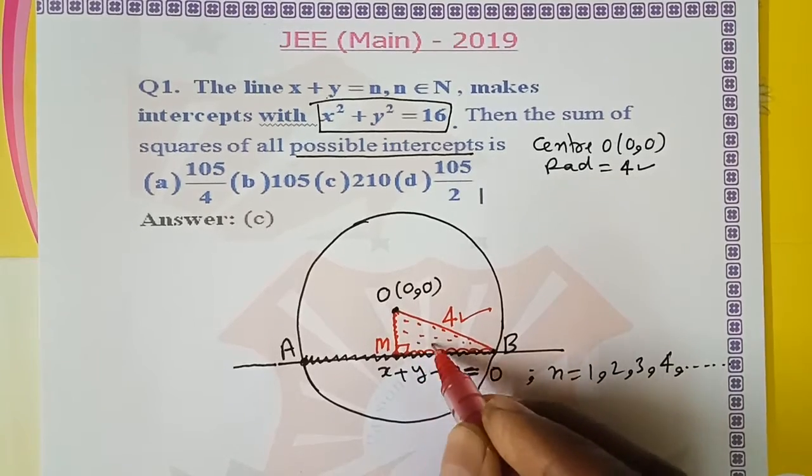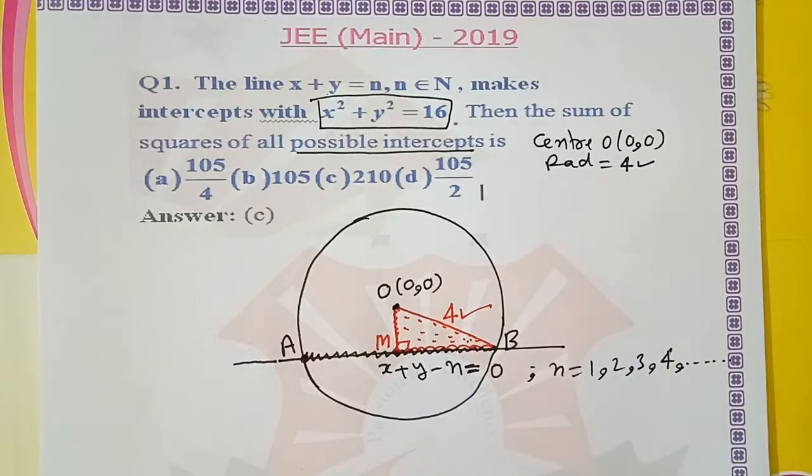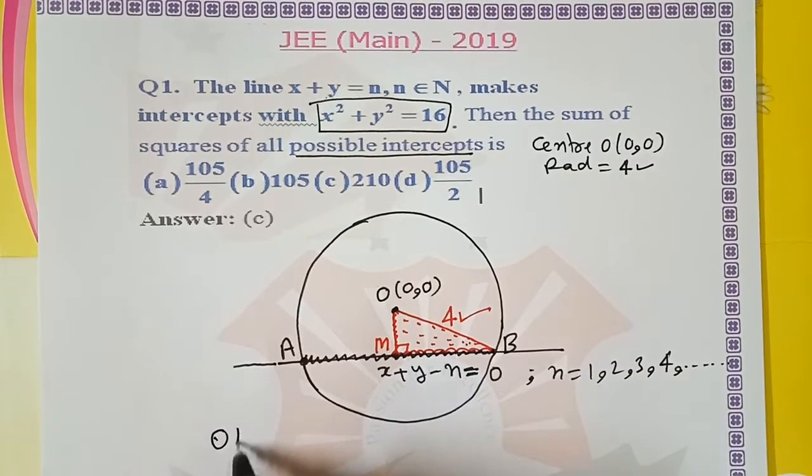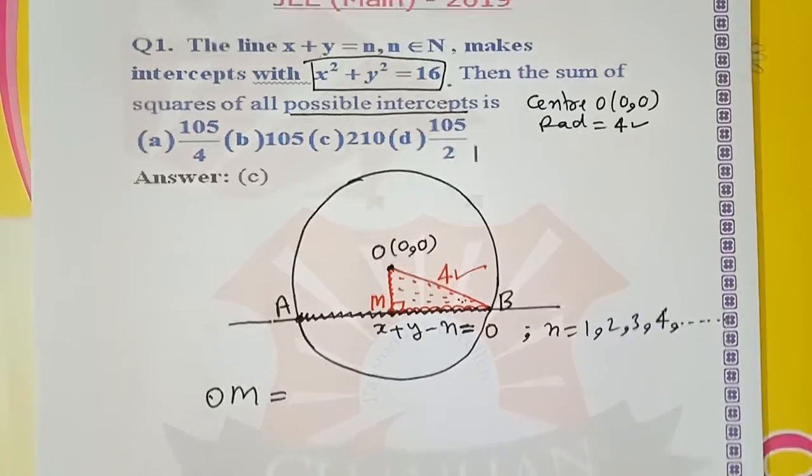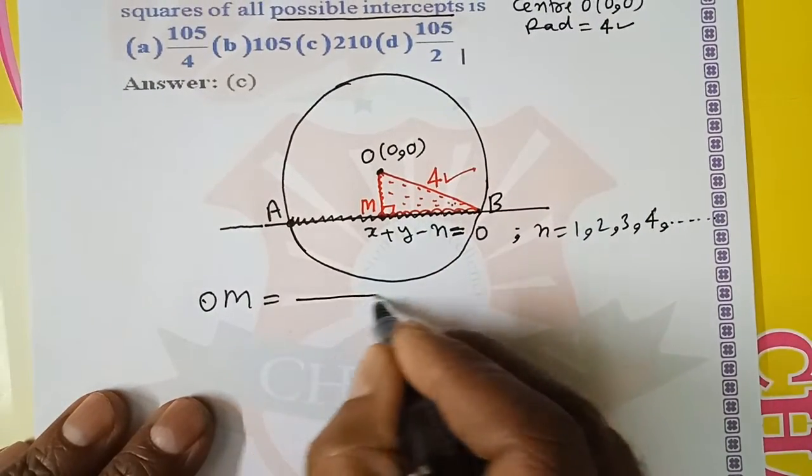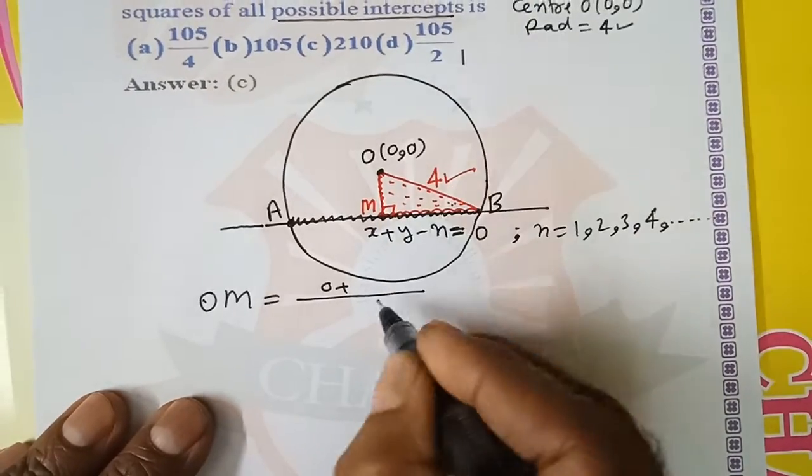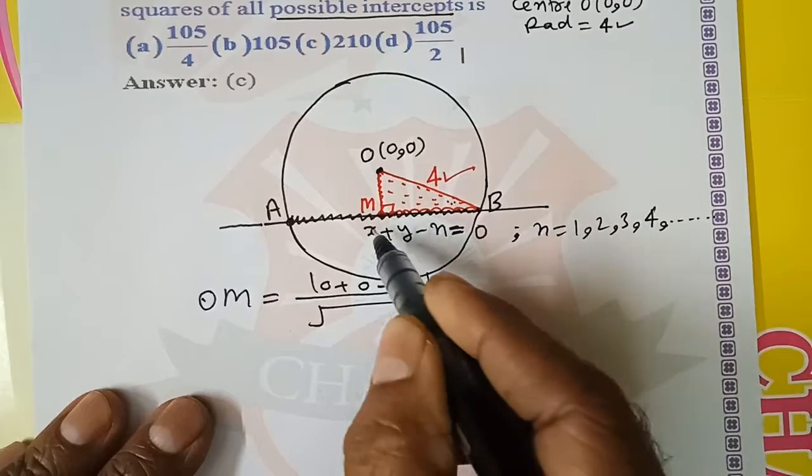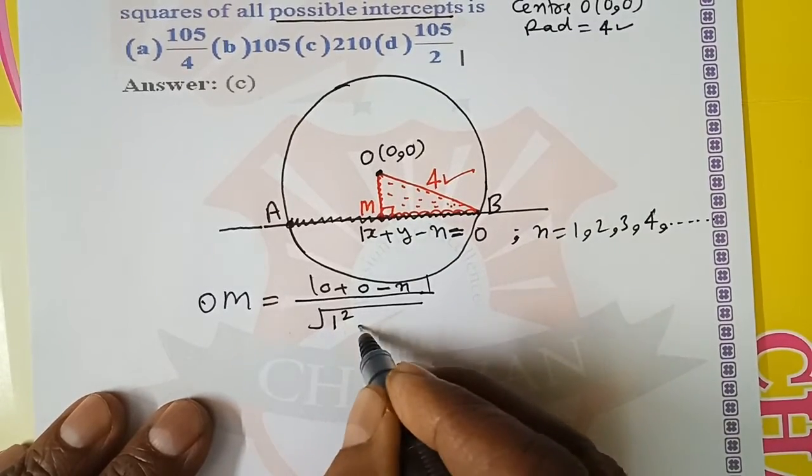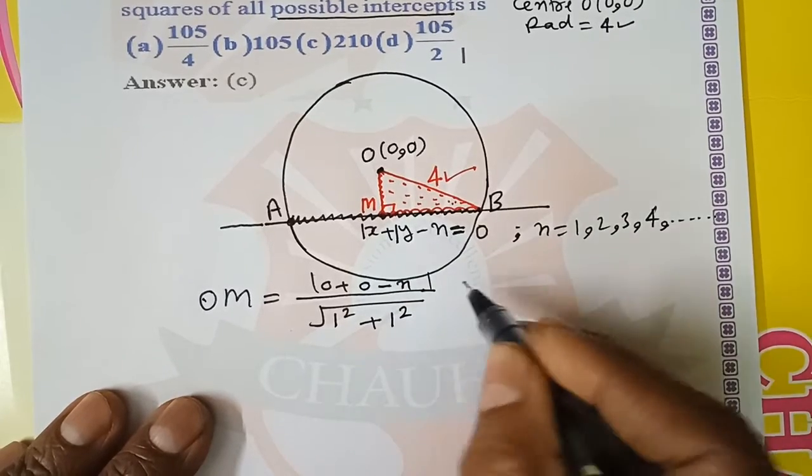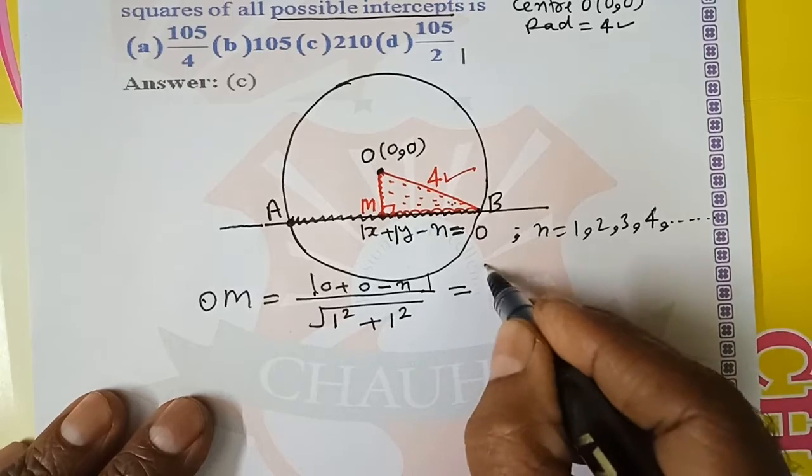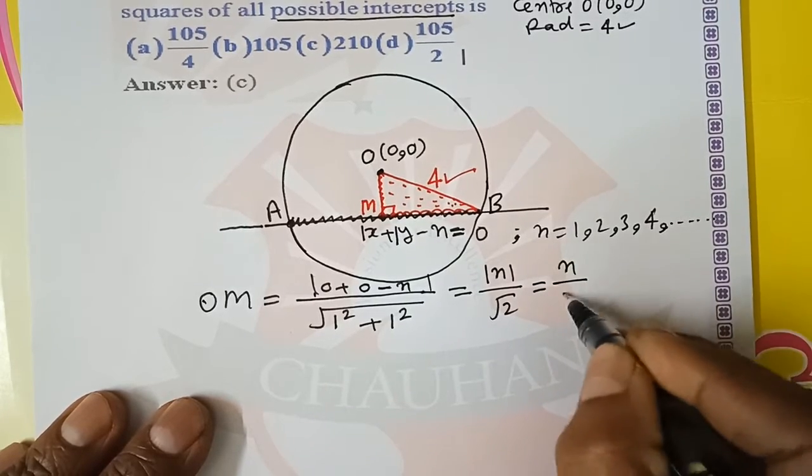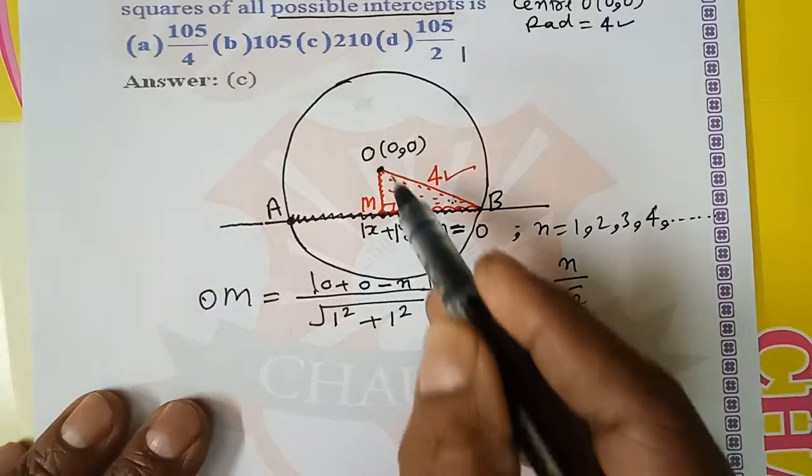Now we find the length of perpendicular using the perpendicular distance formula. OM equals mod of minus n divided by under the root of coefficient of x squared plus coefficient of y squared. This gives mod n by root 2.